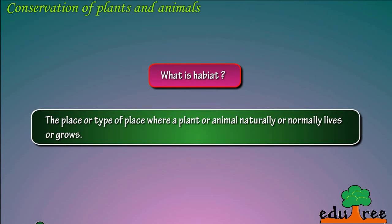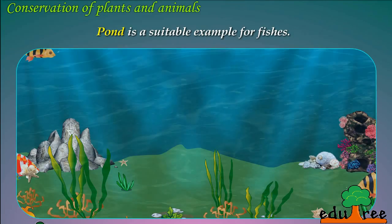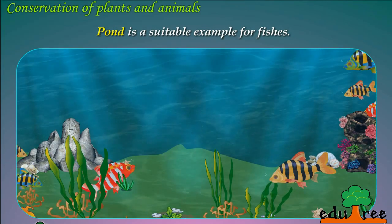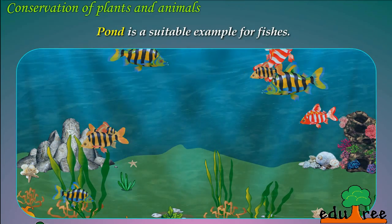What is Habitat? Habitat is the place or type of place where a plant or animal naturally or normally lives or grows. A pond is a suitable example of a habitat for fishes.